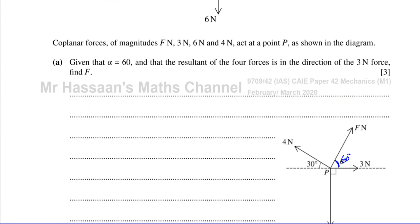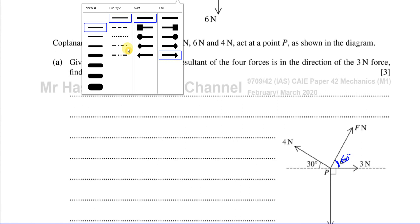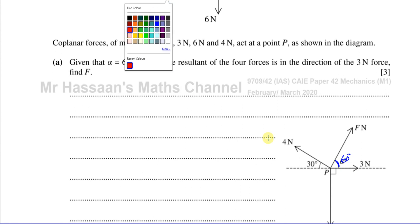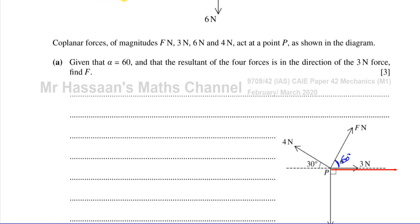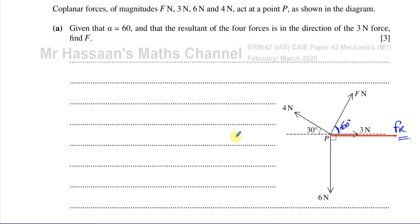The resultant of the four forces is in the direction of the three Newtons force — so the resultant force is in this direction here. We want to find what F is, and what we can do is resolve the forces. Let's resolve them vertically.